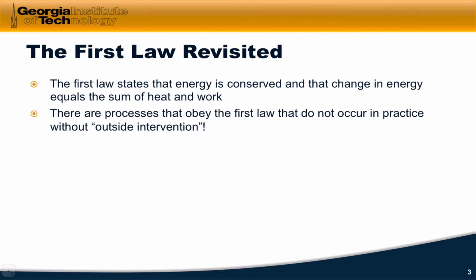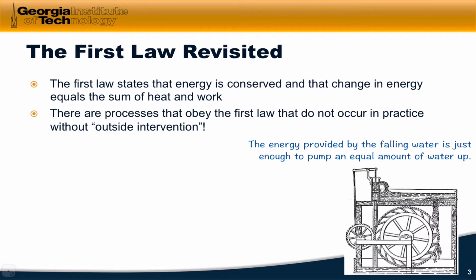There are processes, however, that obey the first law of thermodynamics that do not occur in practice without outside intervention. On the top left of this figure is a faucet delivering water to a trough near the top of the apparatus. Water falls onto a water wheel and as the water wheel spins, it pumps water upward from below. Since the energy provided by the falling water is just enough to pump the same amount of water up to the same height, delta U is equal to zero. So in theory, this apparatus ought to be able to run forever.